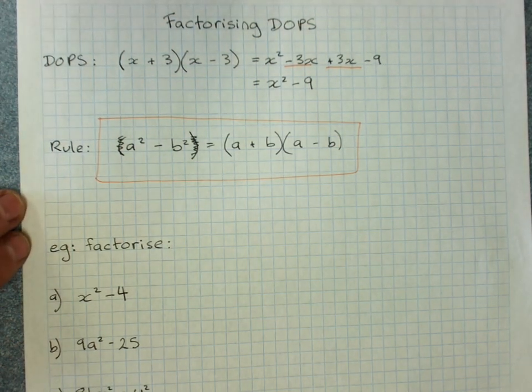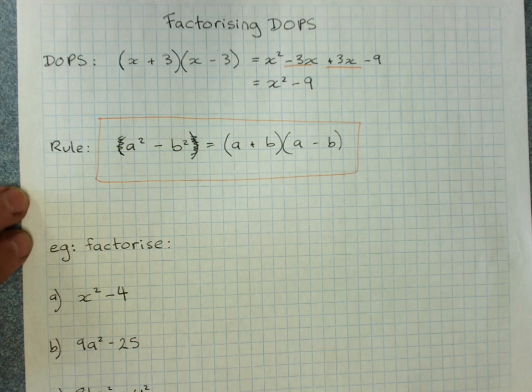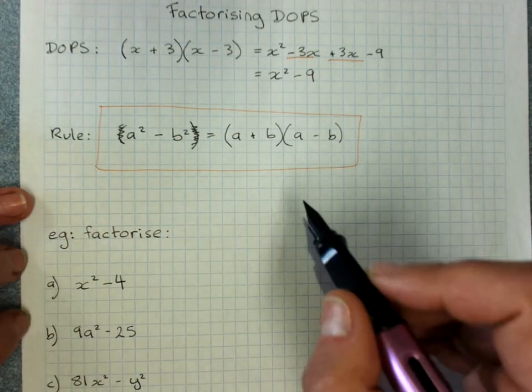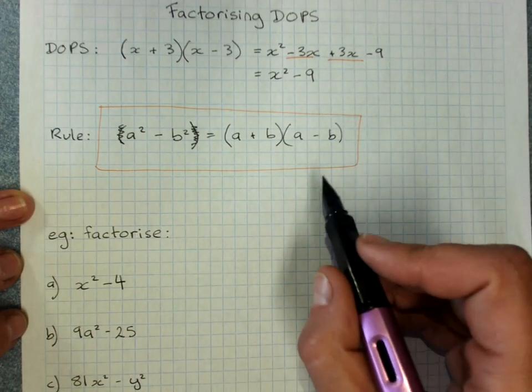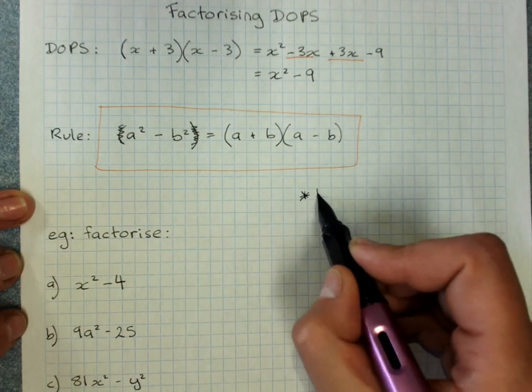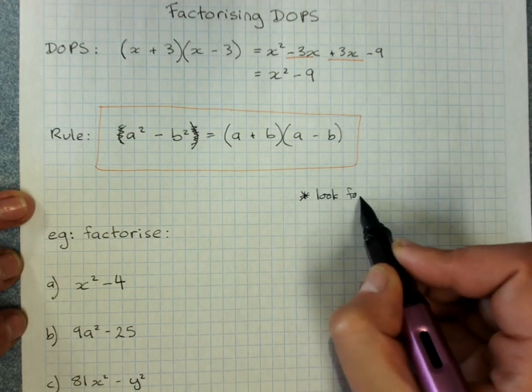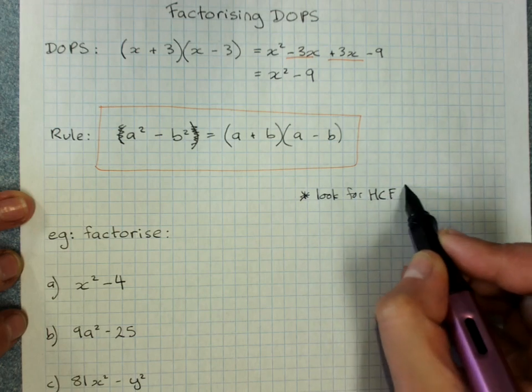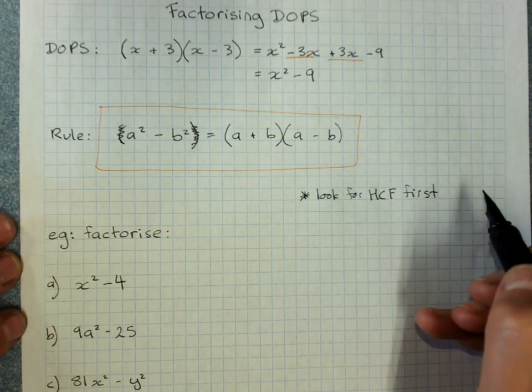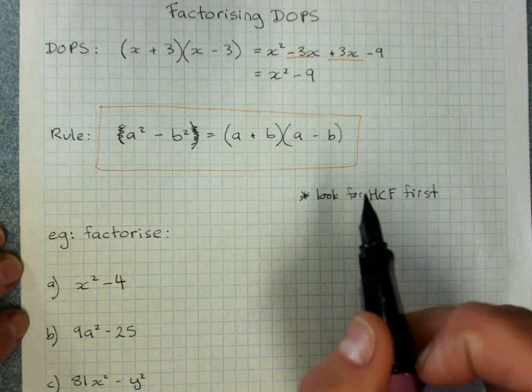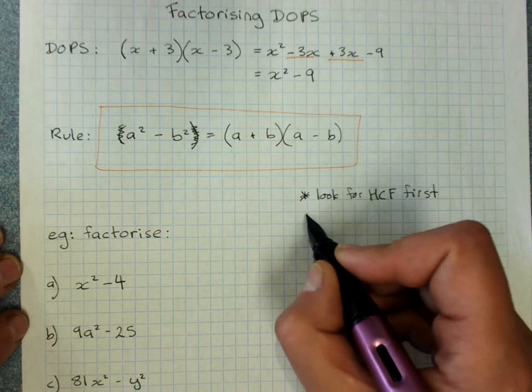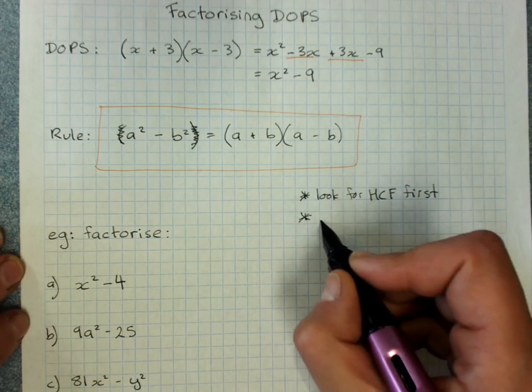One thing you will have to do any time you factorize, and I know I've said this before, I'll say it again, first look for a highest common factor. So any time you're factorizing, check for a highest common factor that you could factorize out, then factorize using an appropriate strategy.